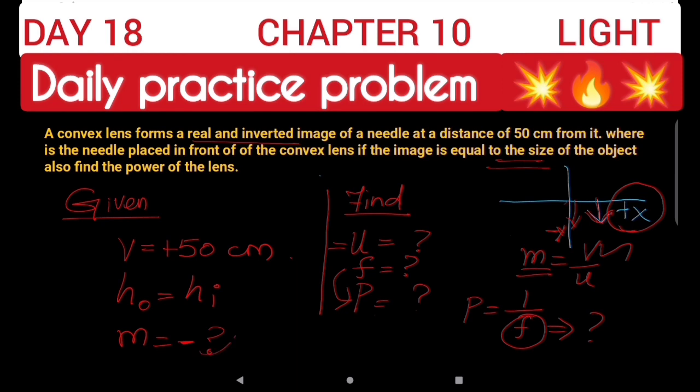So the question is, is M equal to 1 or minus 1? This is the confusion. Remember, V is equal to plus 50 because it's on the positive side of the x-axis. M is equal to minus 1 because this is a real and inverted image on the negative side of the y-axis. So M equals minus 1. These are the two important points to understand about the signs.